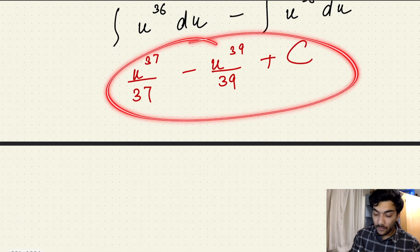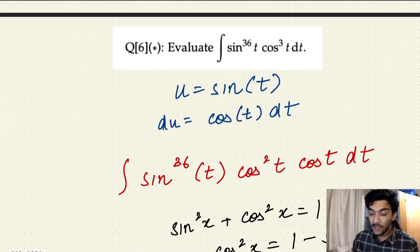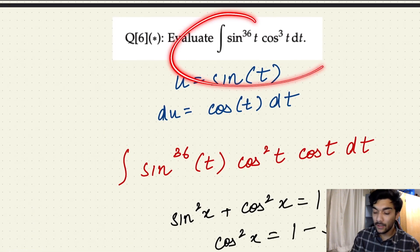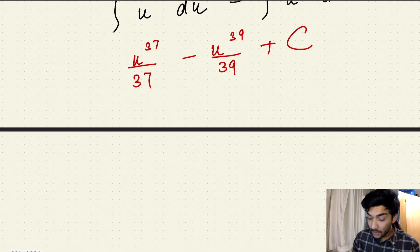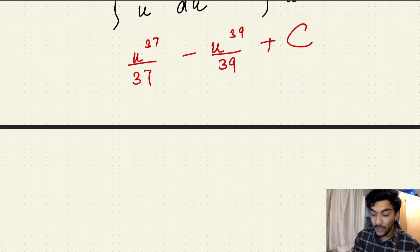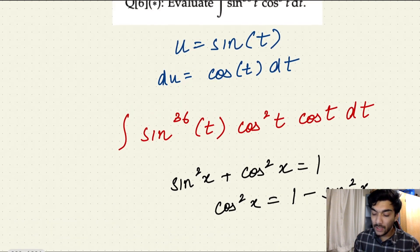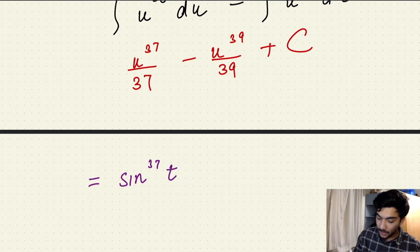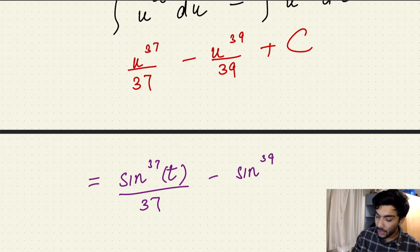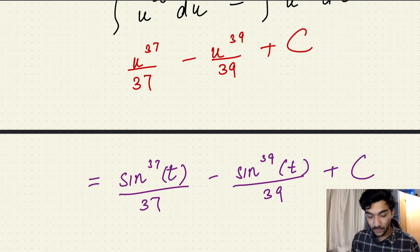This is the final answer in terms of u, but since we need the answer in terms of t, we convert back. Since we assumed u equals sine of t, the final answer becomes sine to the power 37t over 37, minus sine to the power 39t over 39, plus the constant of integration C.